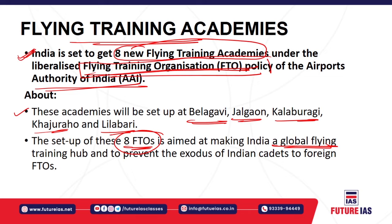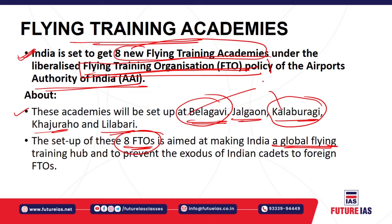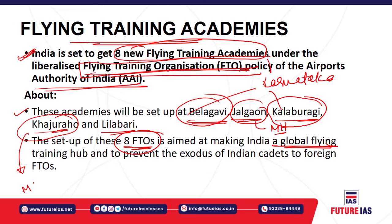With the setup of these Flying Training Academies, Indian cadets will not be required to go outside the country for training, and India will also have the capacity to train flying cadets from other countries. The eight new Flying Training Academies will be set up at five airports: Belagavi and Kalaburagi — both located in Karnataka; Jalgaon in Maharashtra; Khajuraho in Madhya Pradesh — also a famous tourist spot; and Lilabari in Assam.